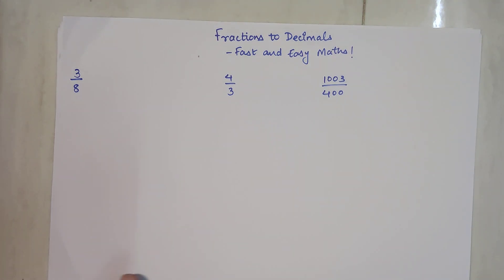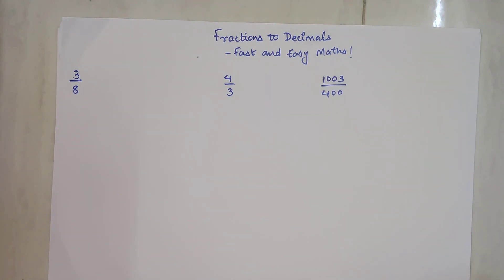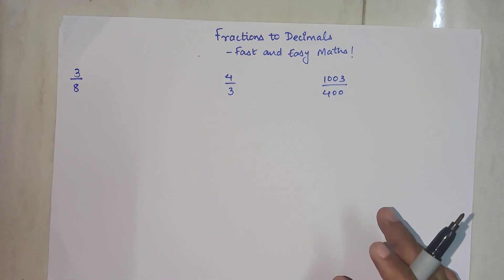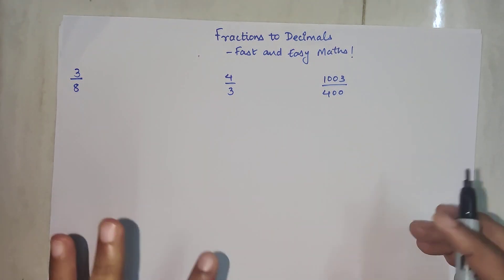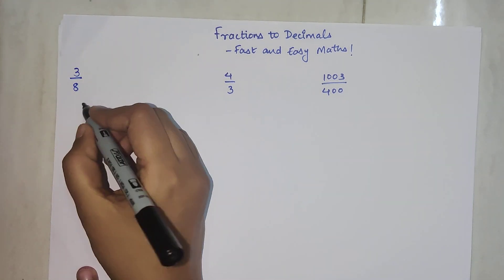But when it comes to numbers where the numerator is very high or the denominator is very high, and it's not completely divisible, then how do you divide it? I've taken three options to show you.